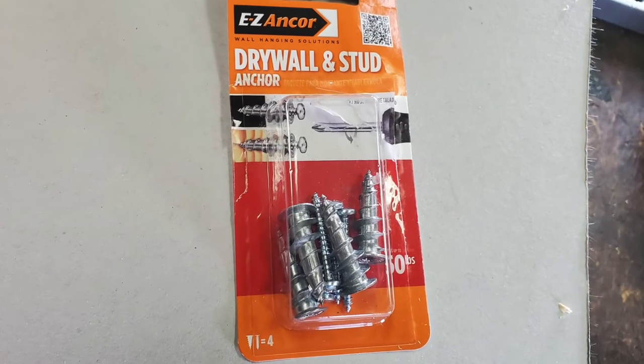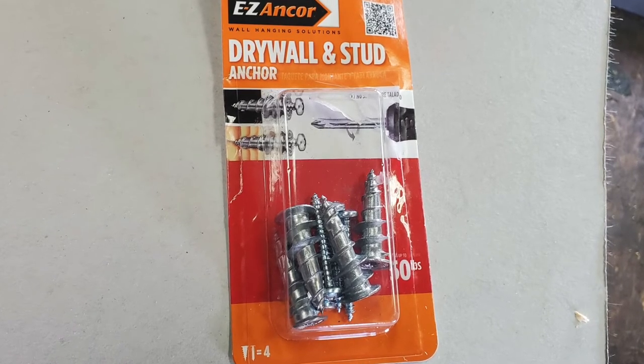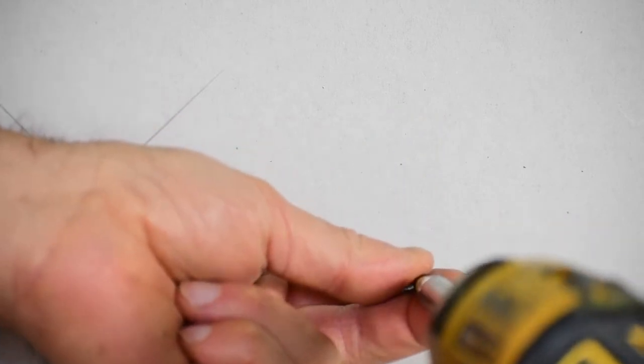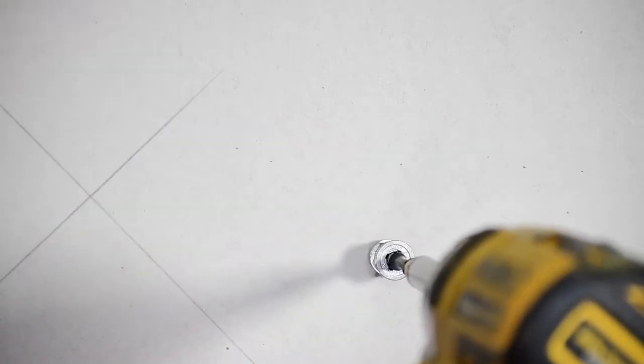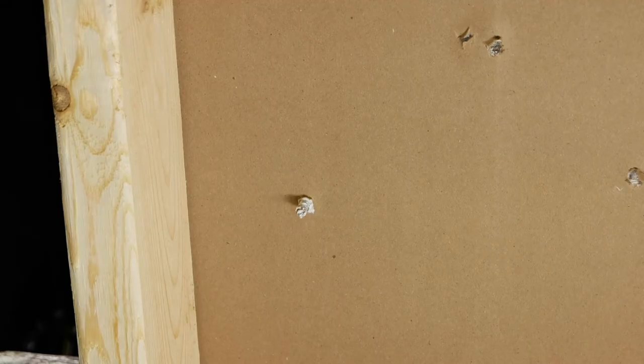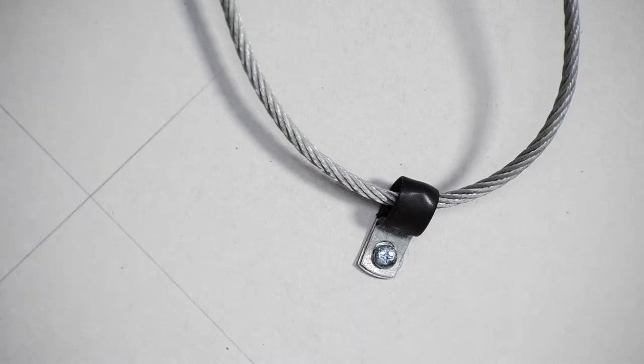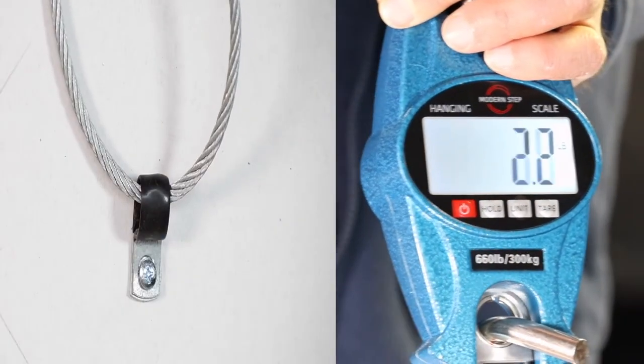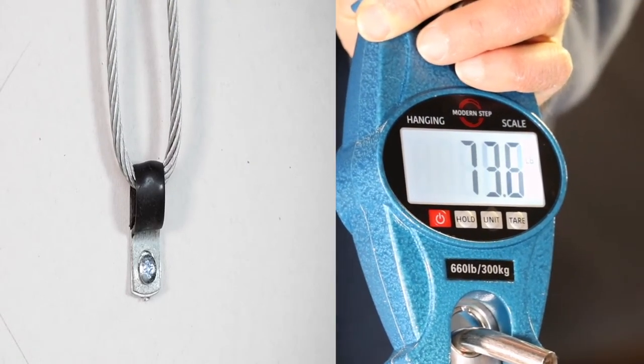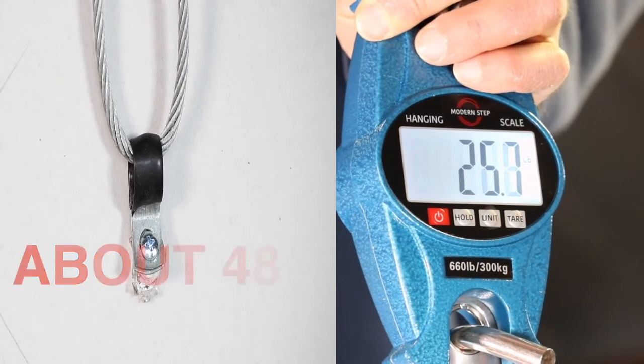Okay, next we have this Easy Anchor Drywall and Stud Metal Anchor. Supposed to be rated at 50 pounds. And these are pretty nice, because they just screw in. I'm sorry if the drill is in the way of the camera. But you just screw them in until they're pretty flat with the surface right there. And let me hook up my scale. Okay, let's see what this one does.